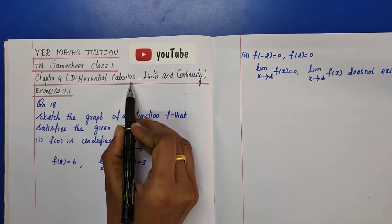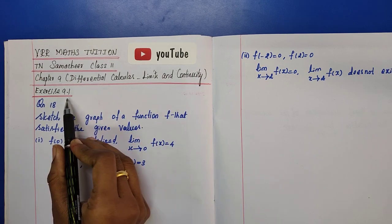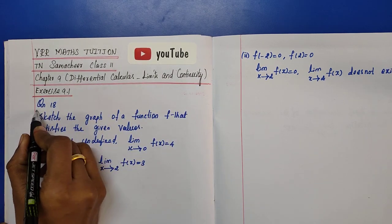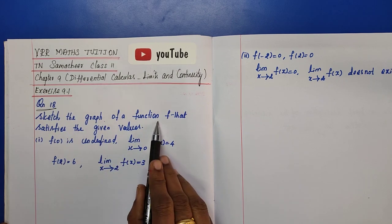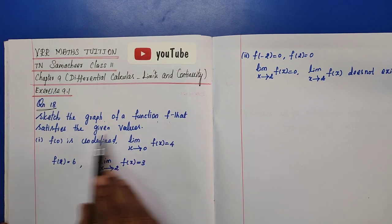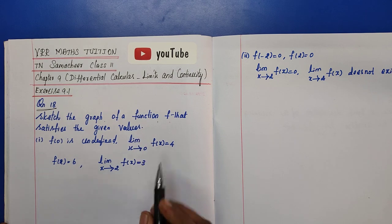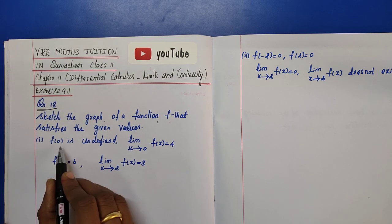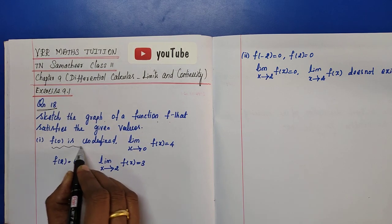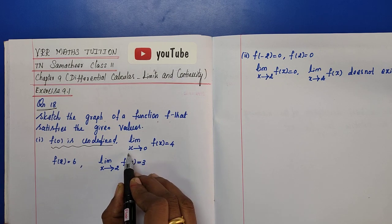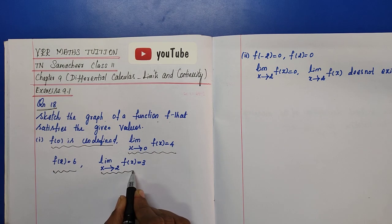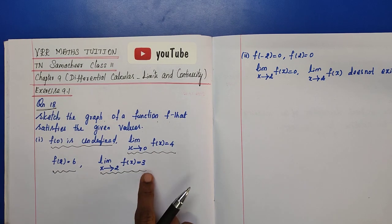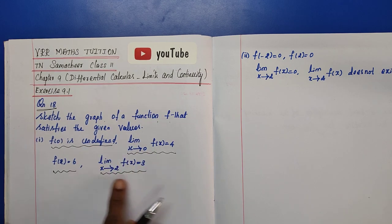Chapter 9, differential calculus, limits and continuity. Exercise 9.1, question number 18: sketch the graph of a function f that satisfies the given conditions. Condition 1: f(0) is undefined. Condition 2: limit as x tends to 0 of f(x) equals 4. Condition 3: f(2) equals 6. Condition 4: limit as x tends to 2 of f(x) equals 3.